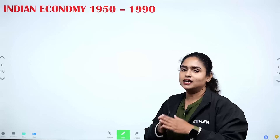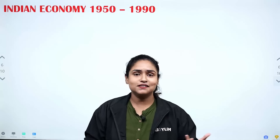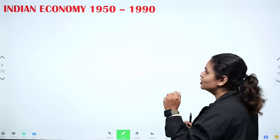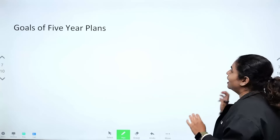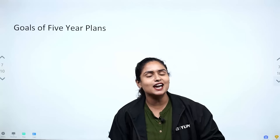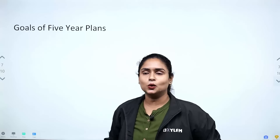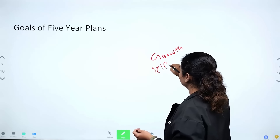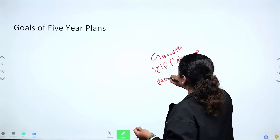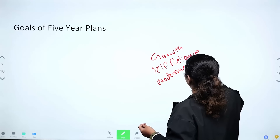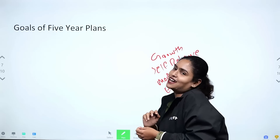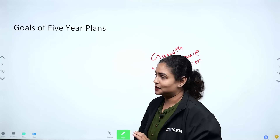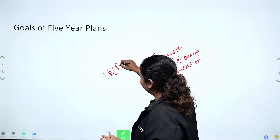Our second chapter is the Indian Economy 1950–1990. The Indian economy had already started developing by the 1980s. The Five Year Plans had four goals: Growth, Self-reliance, Modernization, and Equity.